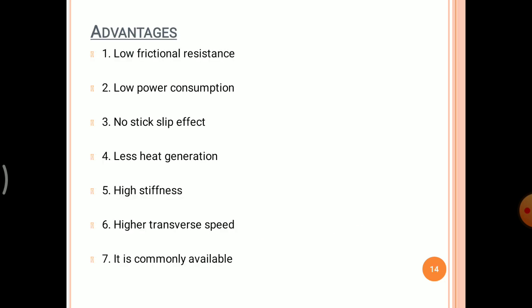The advantages of linear motion guideways are: first, low frictional resistance — since rolling contact exists, friction is less compared to friction guideways. Second, low power consumption, as less friction means less power used. Third, no stick-slip effect, as stick-slip does not exist in anti-friction linear motion guideways. Additional advantages include less heat generation, higher stiffness, higher traverse speed, and common availability.